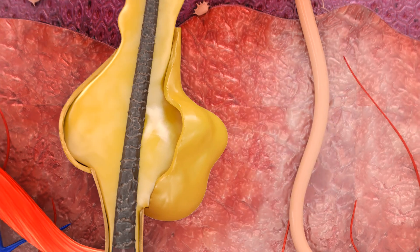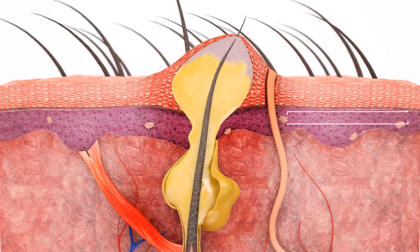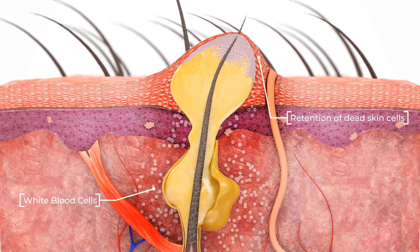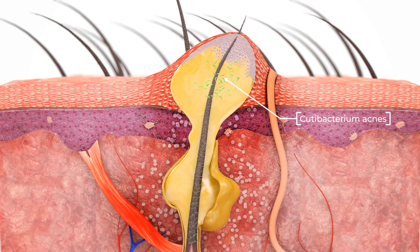Increased sebum production interferes with the process of follicular keratinization, which can lead to pore blockage. Excess sebum production also creates an environment conducive to the proliferation of cutibacterium acnes (C. acnes) in the pilosebaceous unit. These three factors interact and contribute to inflammation and ultimately the formation of acne lesions.